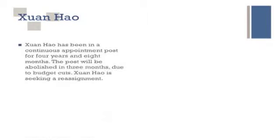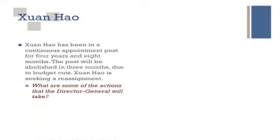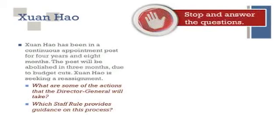Our next situation deals with Wan Ho. He has been in a continuous appointment post for four years and eight months. The post will be abolished in three months due to budget cuts. Wan Ho is seeking a reassignment. The first question is: what are some of the actions that the Director General will take, and which staff rule provides guidance on this process? Stop the training program now and jot down your answers.